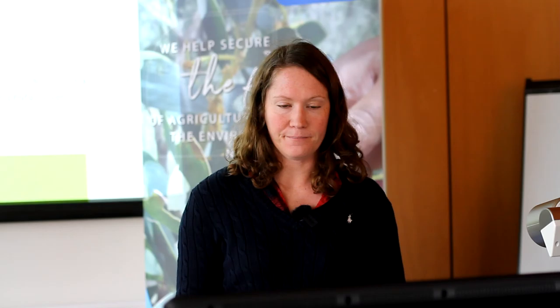Your farm dam in Australia can expect anywhere between zero to seven frog species. If you're interested in knowing how many frog species your dam supports, you can download an app, take a recording of a frog calling, and it will send back an identification. This Australian Museum initiative allows people to do that monitoring themselves and see whether you've got species eating pest bugs.